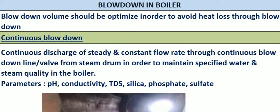There are two types of blowdown: continuous blowdown operation and intermittent blowdown operation. Continuous blowdown is a continuous discharge from the steam drum in order to maintain the specified water quality and steam quality in the boiler. The parameters we normally measure in the steam generator for steam and water are: pH, conductivity, TDS, silica, phosphate, and sulfate. These are the major parameters we need to monitor.